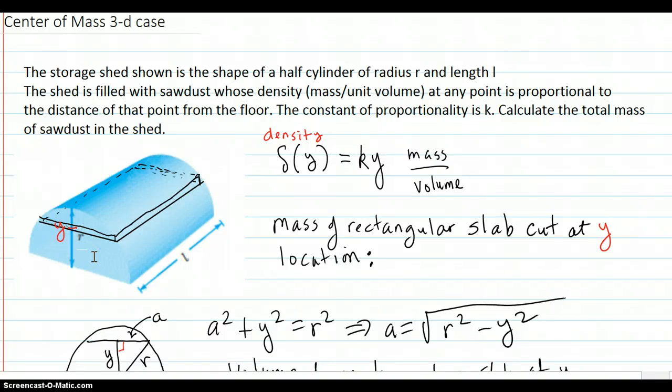Now we're going to examine the center of mass for the three-dimensional case. We have a storage shed in the shape of a half cylinder with radius R and length L as shown. The shed is filled with sawdust whose density, mass per unit volume, at any point is proportional to the distance of that point from the floor.